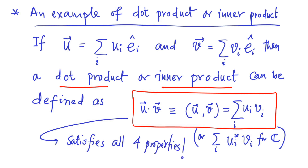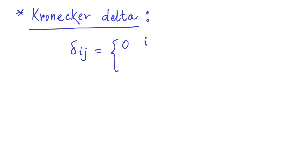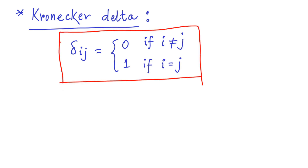If we are dealing with a vector space over the set of complex numbers, the inner product should be modified so that uᵢ is replaced by the complex conjugate of uᵢ. Let us now introduce the notion of Kronecker delta, which is defined as δᵢⱼ equal to zero if i is not equal to j, and equal to one if i is equal to j.